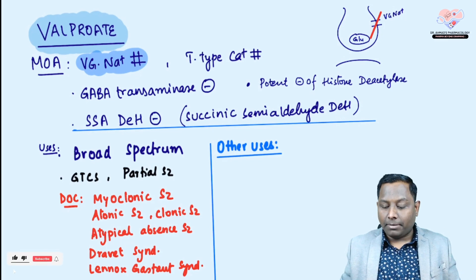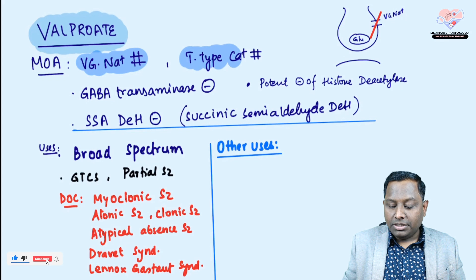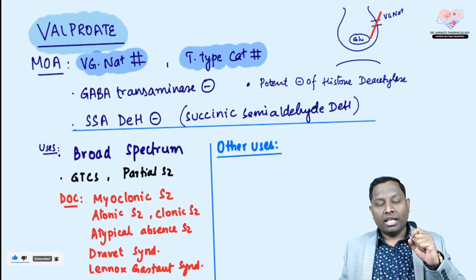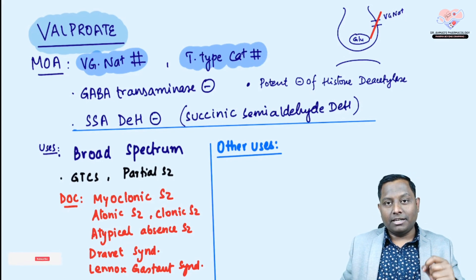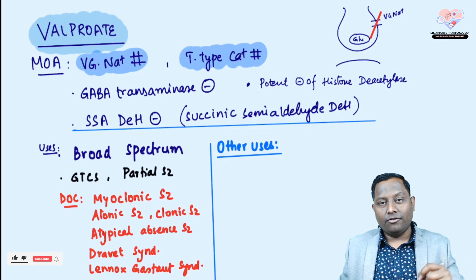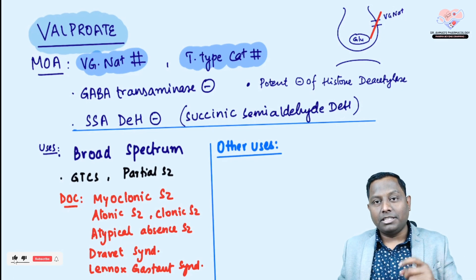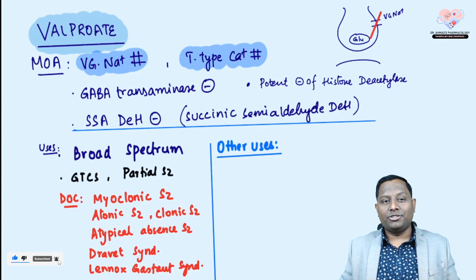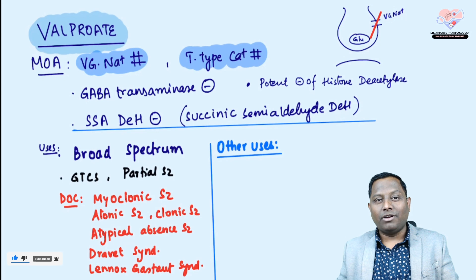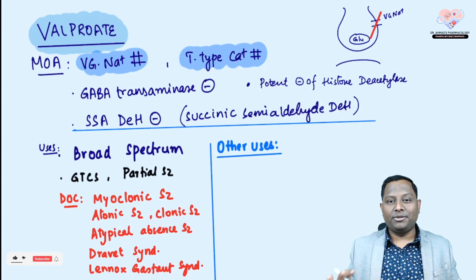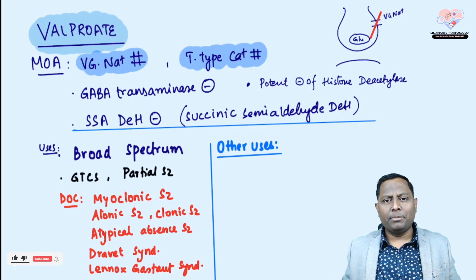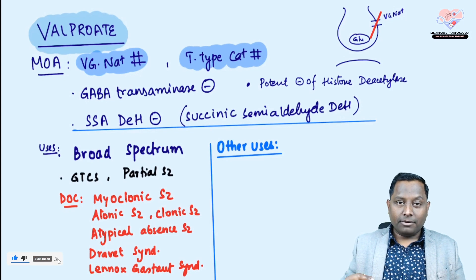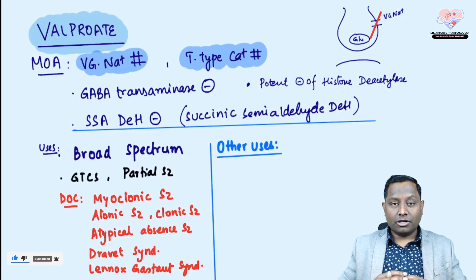Apart from being a voltage-gated sodium channel blocker, on the thalamus we have T-type calcium channels, so valproate also has T-type calcium channel blocking property. This session is important not only for PG and USMLE/MCI candidates but also for second professional students, because they may be given a short note question on valproate, and this information will help them get maximum marks.